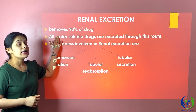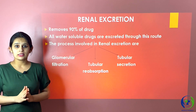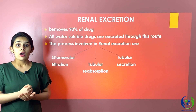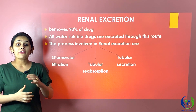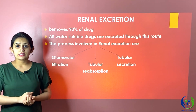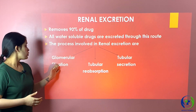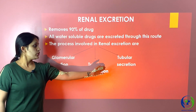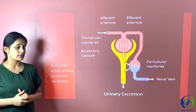90% of drugs are removed through renal excretion. All water-soluble drugs are removed by this route, as well as most lipid-soluble drugs after metabolism. The processes involved in renal excretion are glomerular filtration, tubular reabsorption, and tubular secretion. Let's study all these processes first through a diagram.